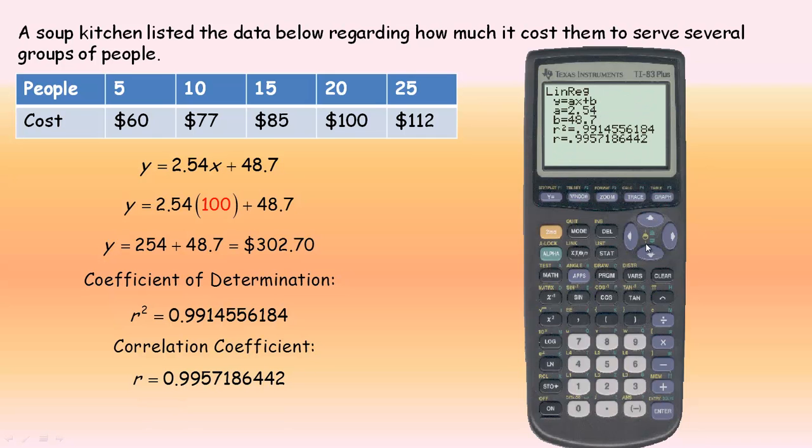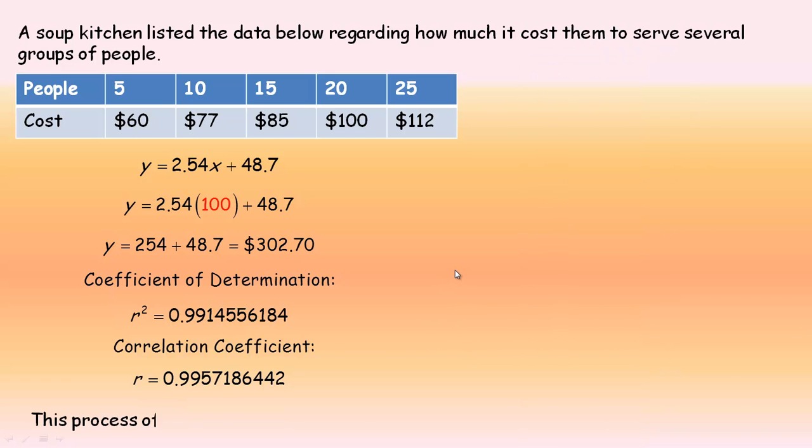This process of finding a line of best fit is actually called linear regression. I've shown you three ways to do it here: by hand with a graph, using the GeoGebra application, and also the graphing calculator. There are several ways you can accomplish that.